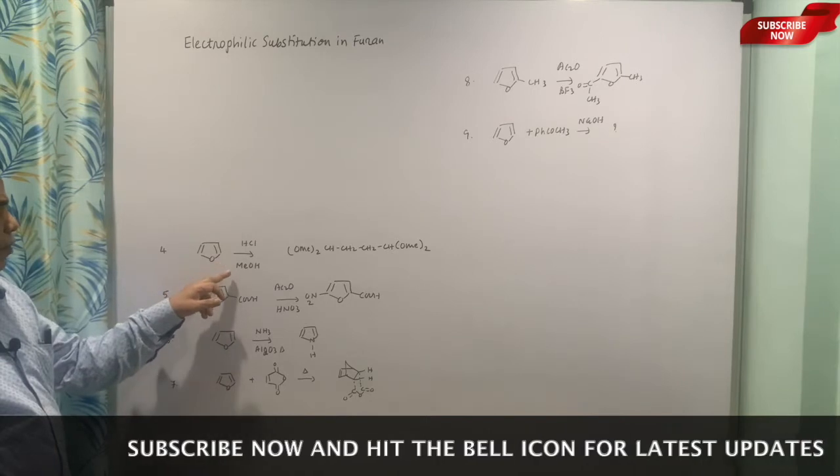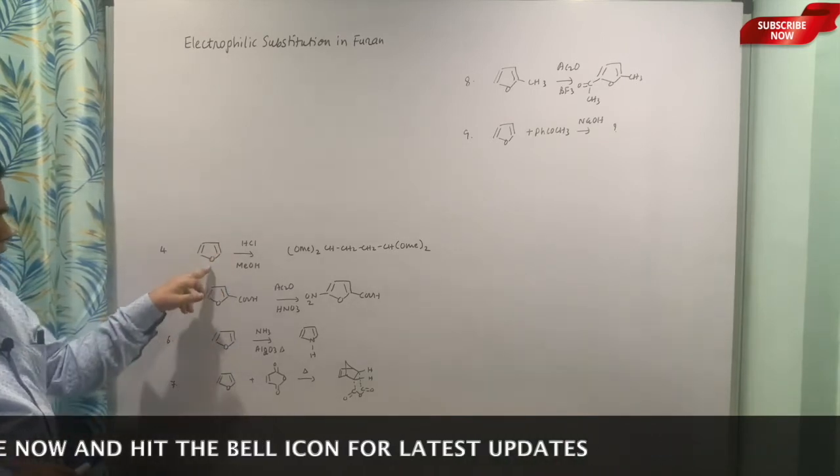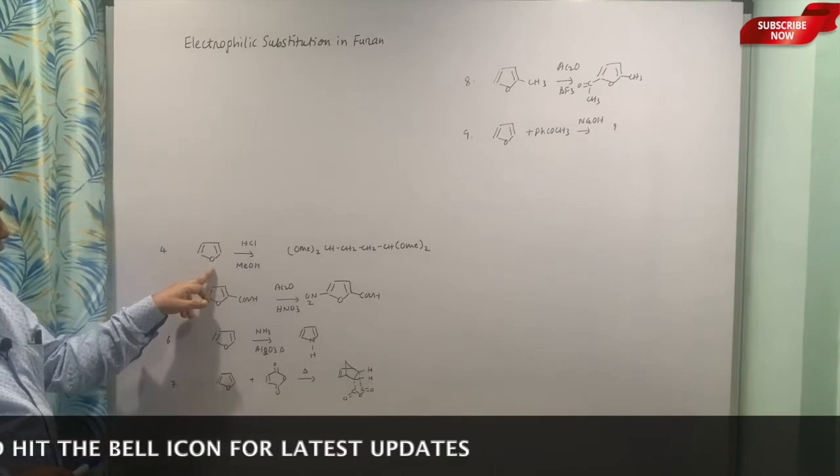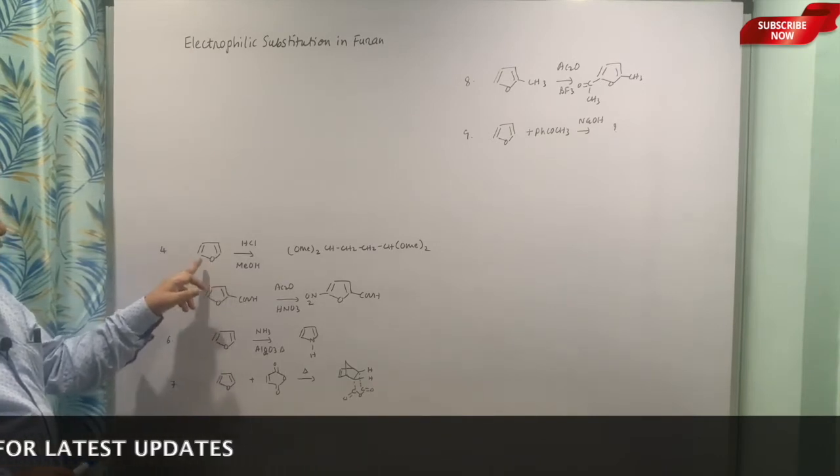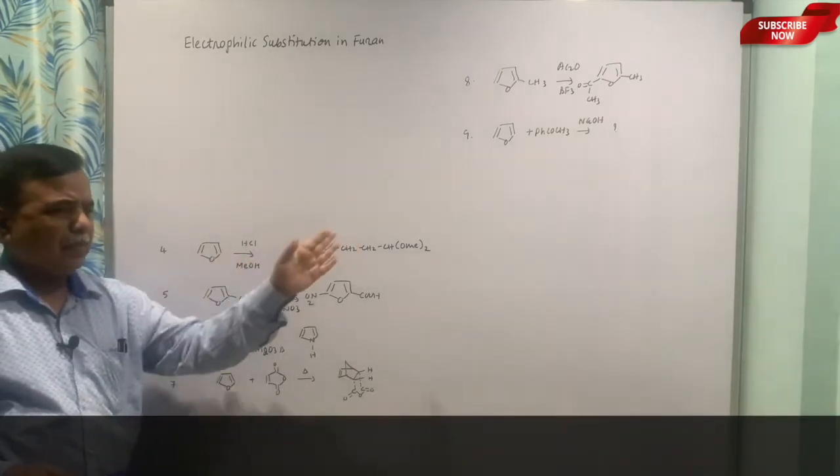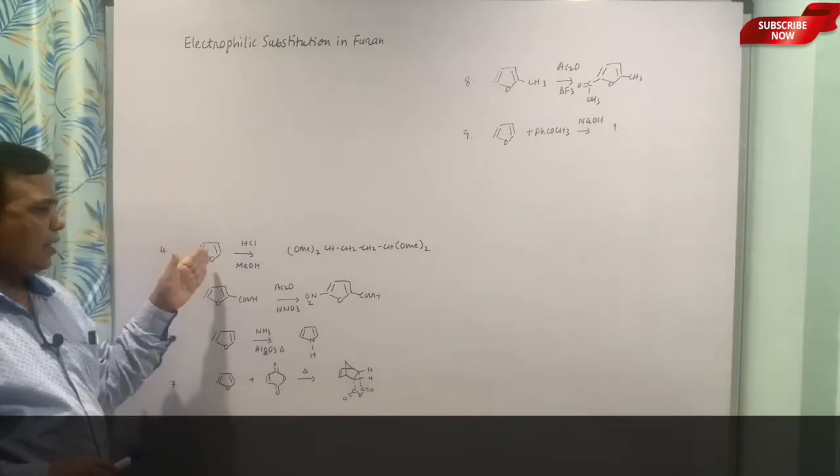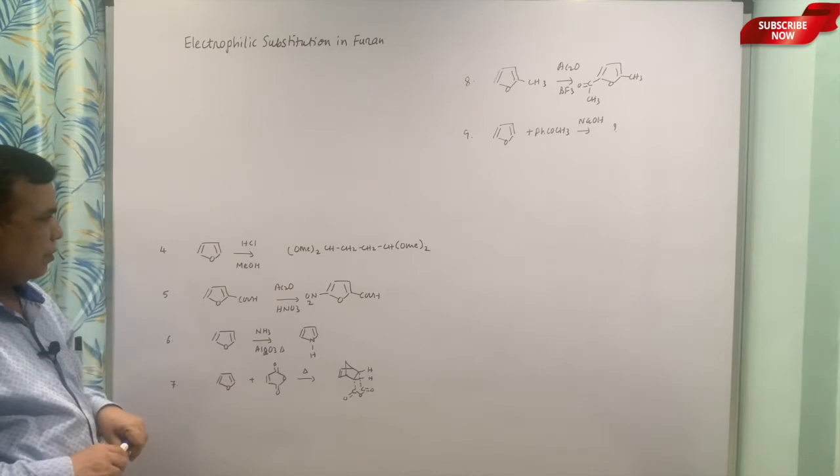Then HCl and methanol. Now HCl and methanol—it is opening of this. HCl will coordinate, like proton will coordinate with this, and then methanol can attack and this will undergo opening. And that is how this is a type of polymerization, because this ring is labile to HCl and then it is reacting with methanol.